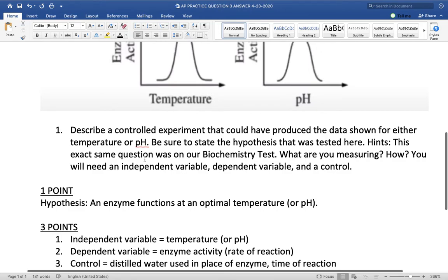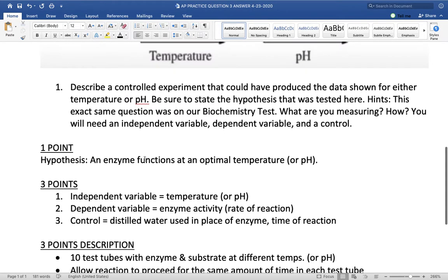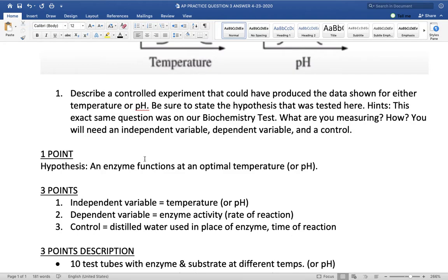How long you allow the reaction to occur in a test tube should be the exact same for every one of your trials or assays, as you would say in science. So, description of the experiment. Three points. And your answers will vary. This is my answer. So certainly, there are a lot of different things you could come up with. But I would say use 10 test tubes. And you'll put the enzyme and the substrate in those test tubes. But each test tube will be at a different temp.